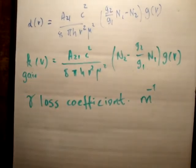So our gain is k and our loss is gamma. And I'll tell you that when you have a threshold...